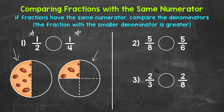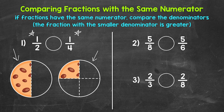It's because of the denominators. The cookie on the left is split into two parts, so the parts are bigger than the cookie on the right, which was split into four parts. When we have the same numerator, we compare the fractions by looking at the denominators. The larger a denominator is, the more parts a whole is divided into — therefore, the parts are smaller. The smaller a denominator is, the fewer parts a whole is divided into — therefore, the parts are larger. So if we have fractions with the same numerator, the fraction with the smaller denominator is greater. Our comparison symbol always opens up towards whatever is greater, and we read this as one-half is greater than one-fourth.